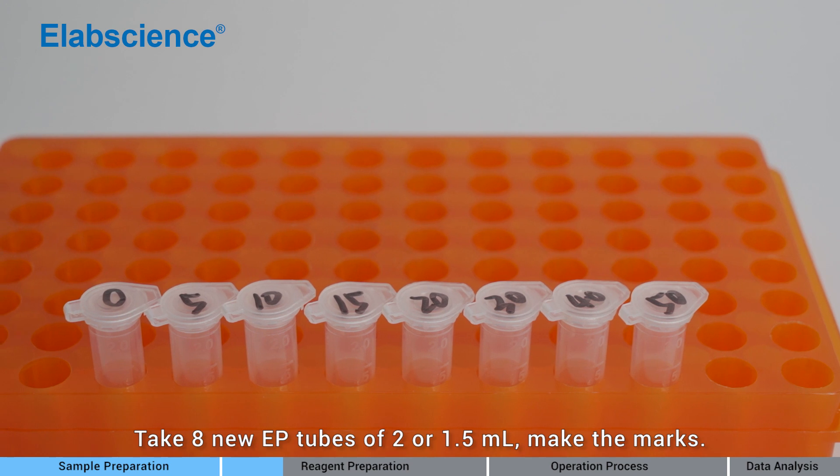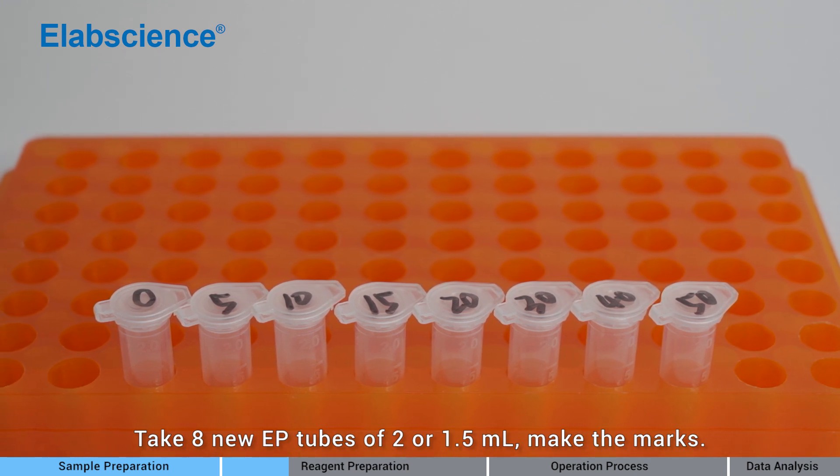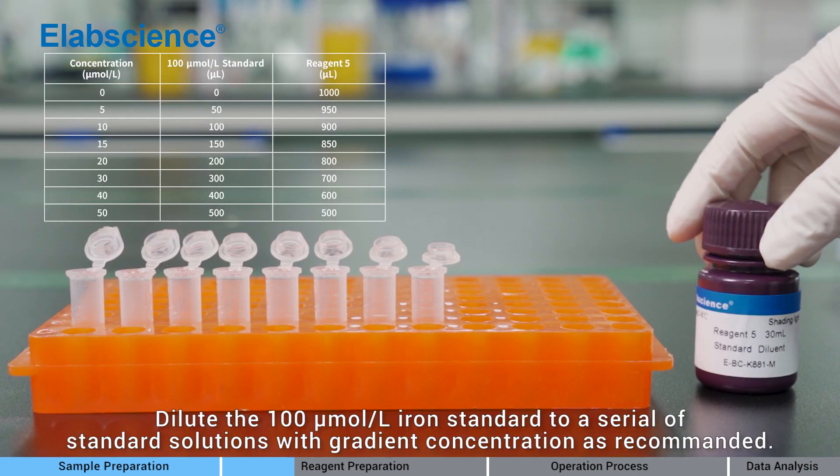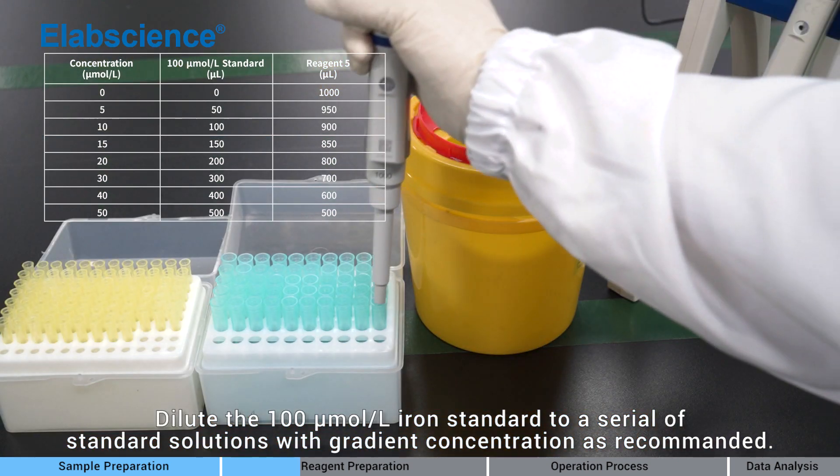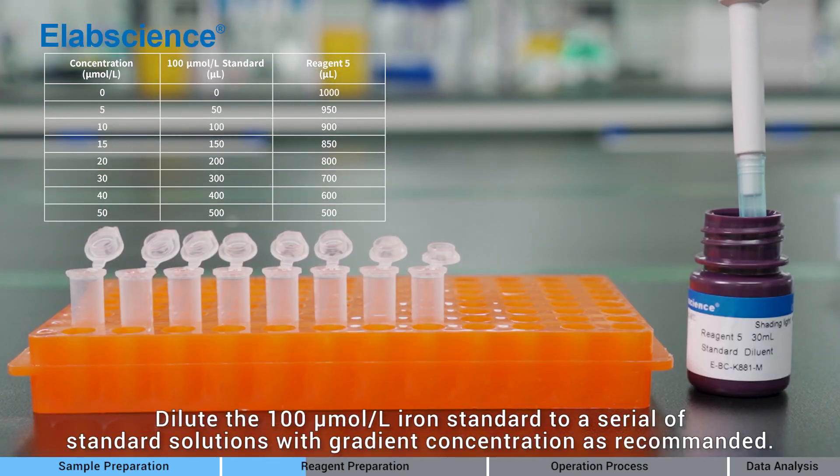Take 8 new EP tubes of 2 or 1.5 ml. Make the marks. Dilute the 100 micromolar per liter iron standard to a series of standard solutions with gradient concentration as recommended.